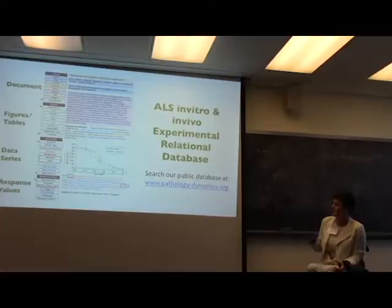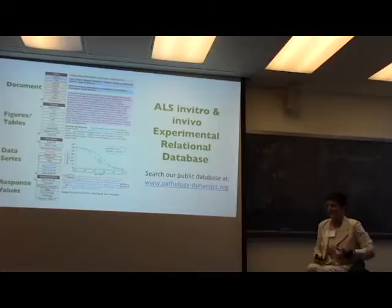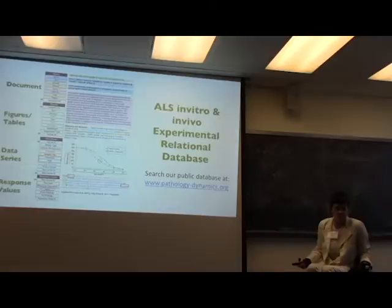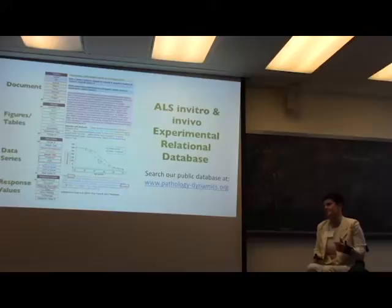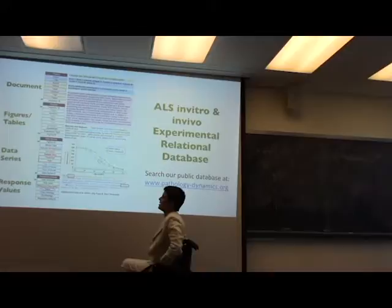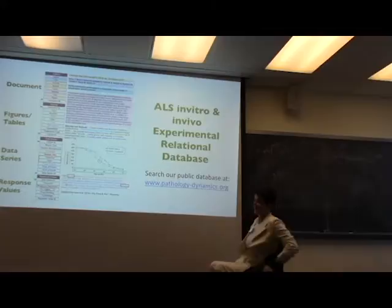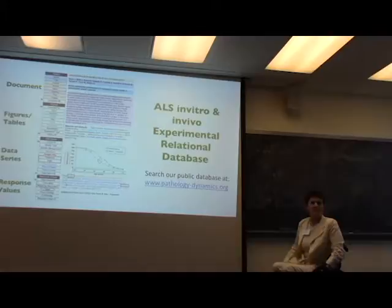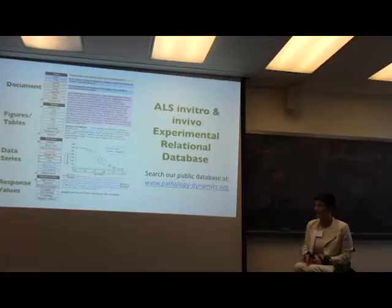This is what the experimental database looks like. So we use the structure of the paper to dictate what the fields are in our database, because that's the only thing that they have in common, is the structure of the paper, because the experiments are so different. So we have the document, the figure table, the data series, and the response value. As you go into the paper, you can get deeper and deeper to the point where we're extracting that data point. But we also give you everything else you need to know.